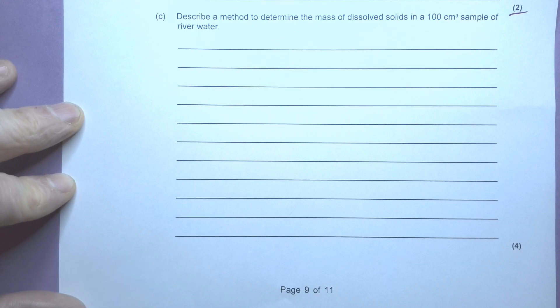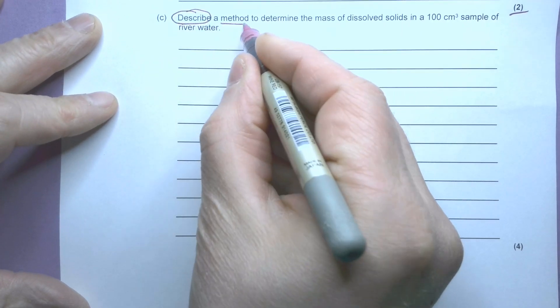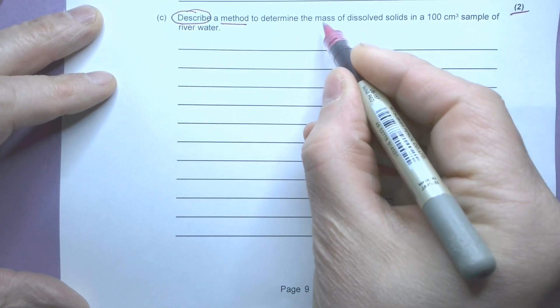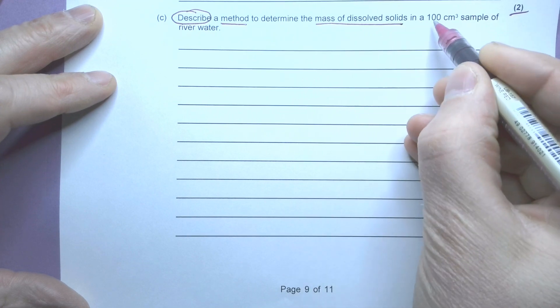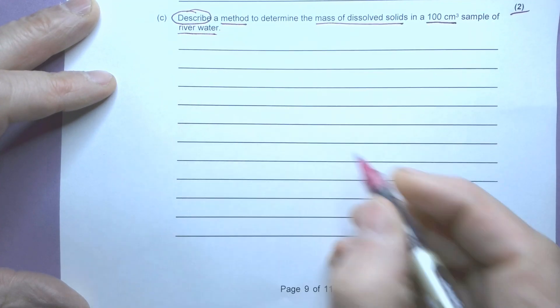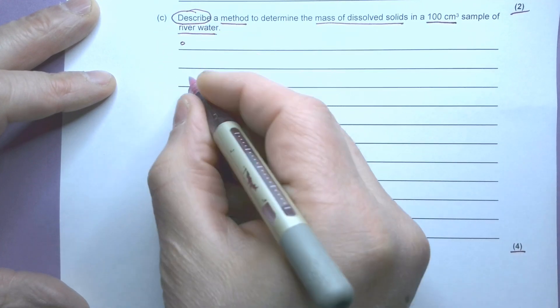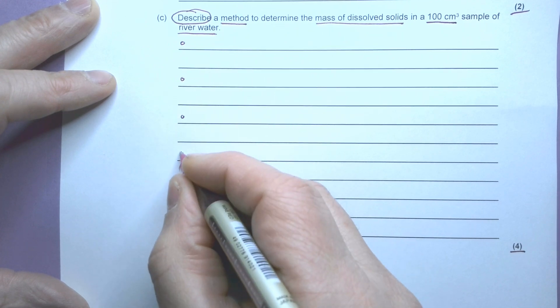Okay, question 4c is describe a method to determine the mass of dissolved solids in a 100 centimeters cubed sample of river water. It's worth four marks, so it's going to be four bullet points: one, two, three, four.